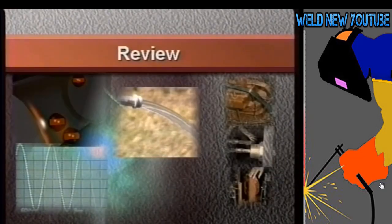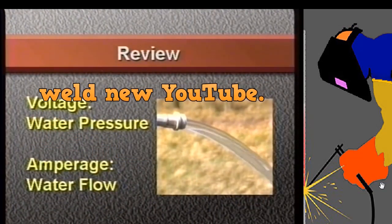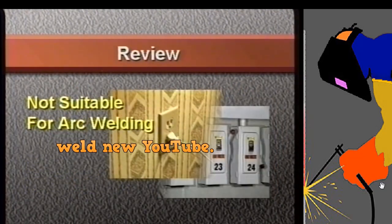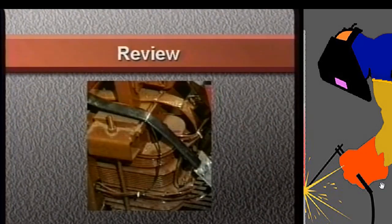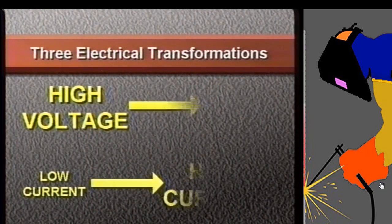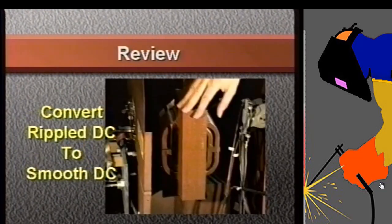To conclude, let's briefly review what you've seen and heard. The properties of electrical energy: voltage compares to water pressure, and amperage compares to water flow. Standard household and industrial alternating current electricity is not suitable for arc welding. Therefore, a transformer in an arc welder converts electricity at high voltage with low current to the desired characteristics of low voltage at high current flow. Finally, rectifiers convert alternating current to rippled direct current, and a filter smooths out the ripples to produce direct current for welding.